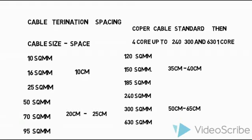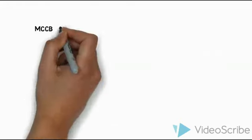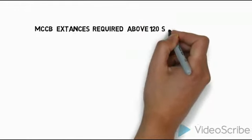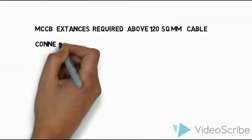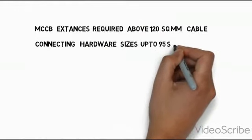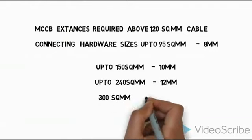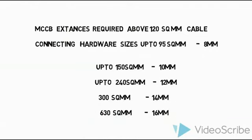So let's do this panel assembly. Let's use the extension of MCCB. The size of the cable hardware is 10 square or 12 square mm. Let's use the size of the cable.